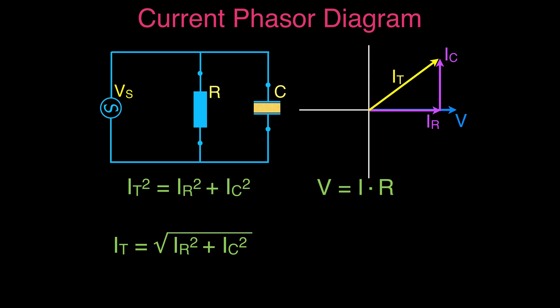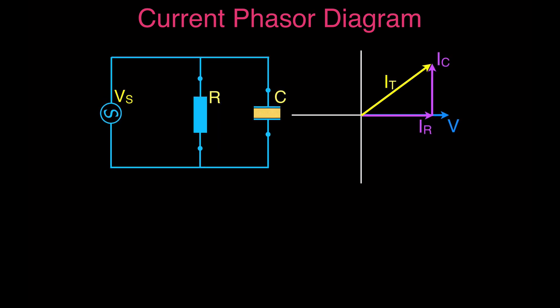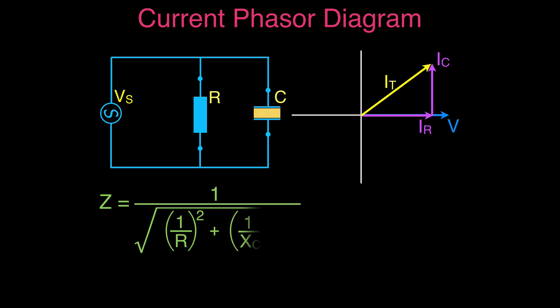Once we have the total current, we can get the impedance using Ohm's Law: for AC, voltage equals current times impedance, so impedance equals voltage of the source divided by total current. There's also another equation: impedance equals one over the square root of (one over R squared plus one over capacitive reactance squared). It's good to calculate the impedance both ways and verify you get the same answer — that gives you confidence you have the right result.